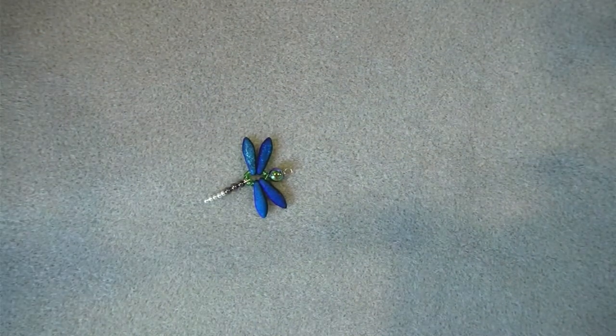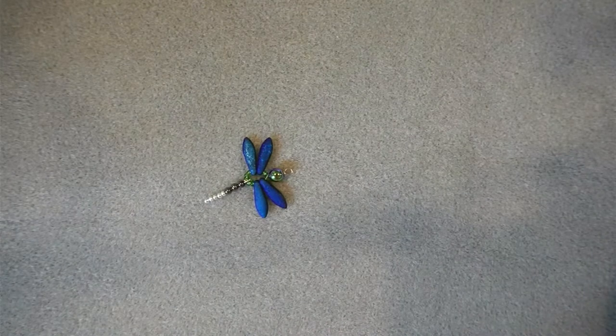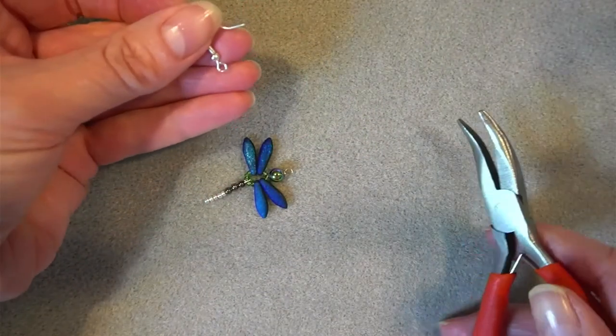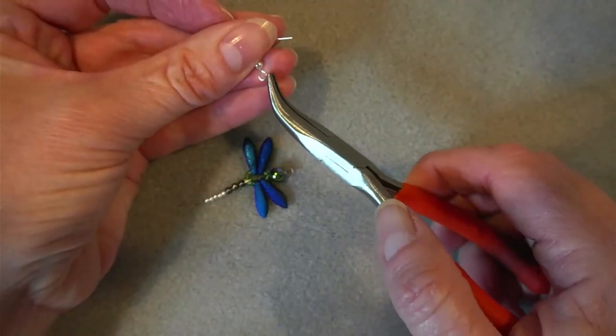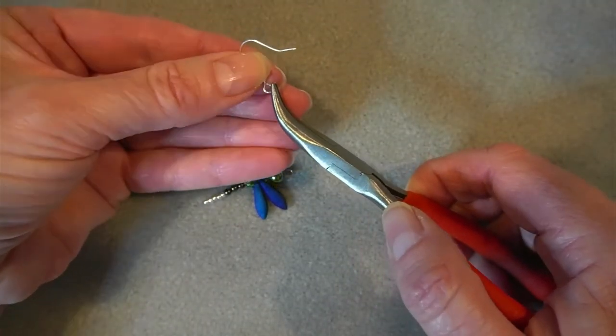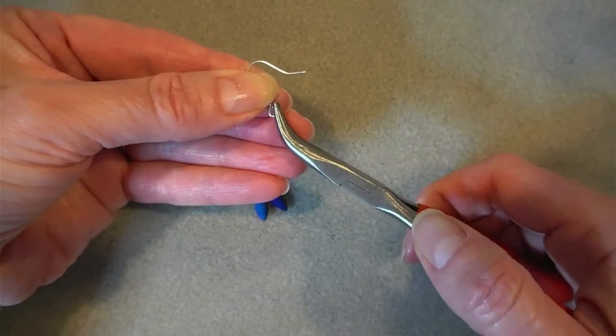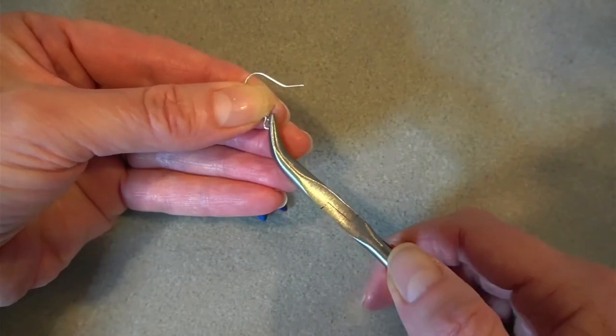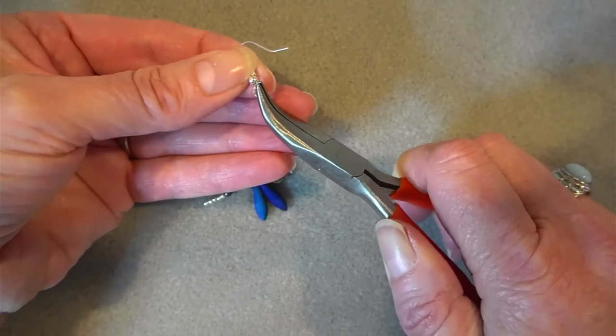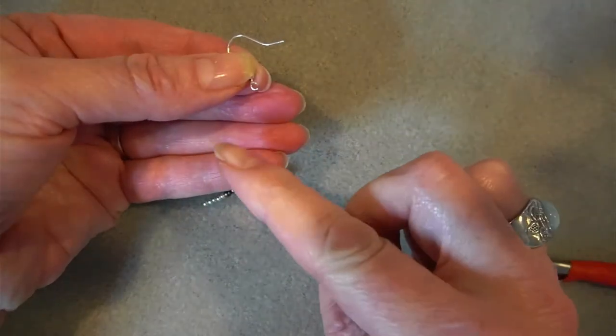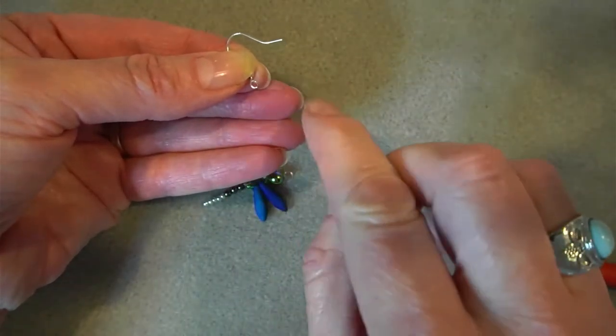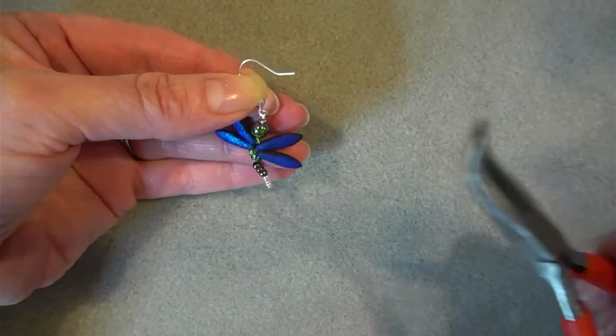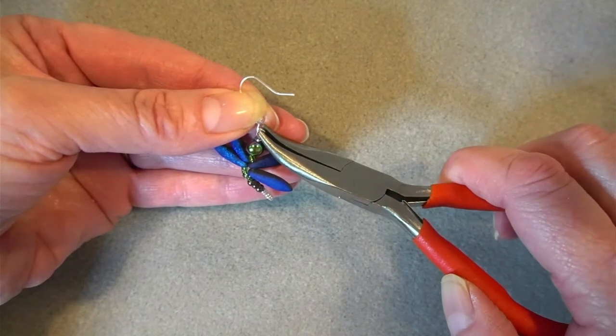Okay, so there's your dragonfly earring. All you need now is to pop on the ear wire, which I have here. And I'm going to do that simply by grabbing my pliers with the side, grabbing the side of the ear wire with my pliers, not like this, like this, and twisting up. And the reason we twist up instead of out is to maintain that nice loop. And then I'm just going to pop on my dragonfly and close the loop.